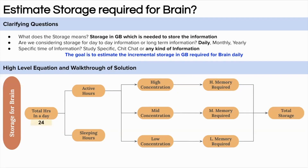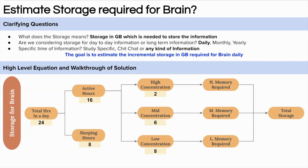There are 24 hours in a day. Let's assume 16 hours are active hours and 8 hours are sleeping hours. Now drilling down into active hours: let's assume people do high concentration work for 2 hours, medium concentration work for 6 hours, and low concentration work for the remaining 8 hours. Now here comes the tricky part — converting these into the amount of storage required.